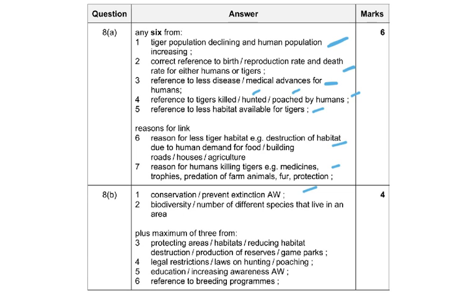For part B on conservation: we must do conservation measures to prevent extinction. Biodiversity must be maintained so that the number of different species in an area is preserved, since species are interdependent in food chains. We can protect areas or habitats by creating nature reserves where people can observe animals but no construction is allowed. Legal restrictions on hunting and poaching, education so people don't buy products made from tiger fur, and captive breeding in zoos — breeding males and females, allowing offspring to mature, then releasing them back into the wild — are all valid suggestions.